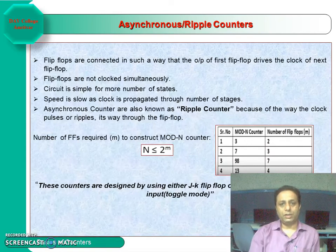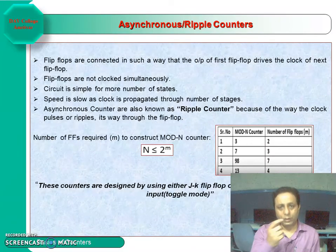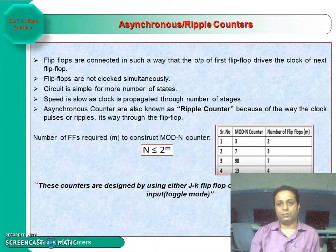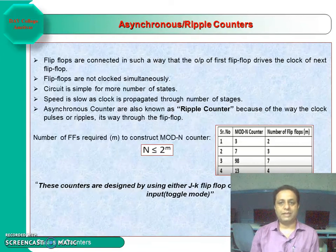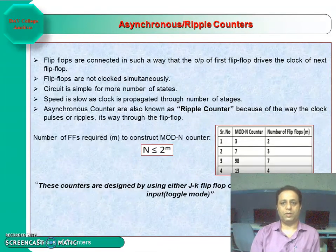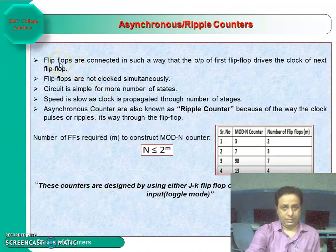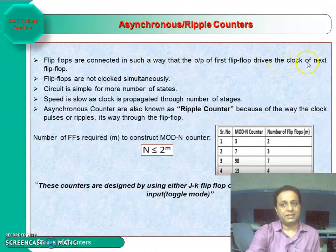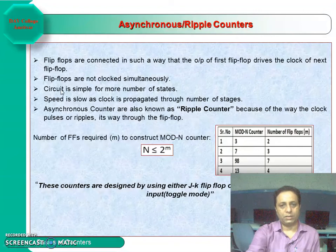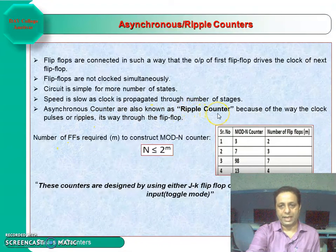Ripple counters are another name for asynchronous counters because the clock ripples from the least significant flip-flop to the most significant flip-flop. The output of the first flip-flop drives the clock of the next flip-flop. They are not clocked simultaneously, the circuit is simple, and that is why they are called ripple counters.